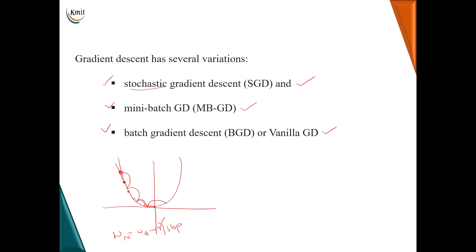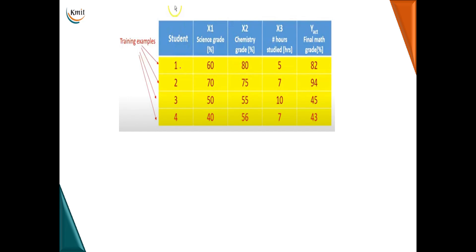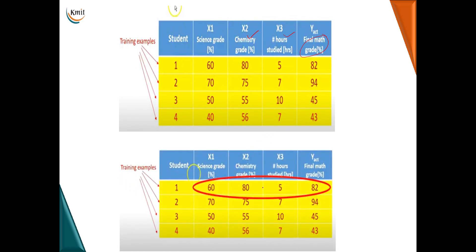Let's discuss all three variations using a simple example. Consider training data with four examples — four students with inputs x1, x2, x3 (science grade, chemistry, and study hours) and output y (grade marks). In stochastic gradient descent, only one training example is taken at a time to carry out forward and backward passes to update the weight. It is not compulsory to take the first example — any random example may be selected. Hence it is called stochastic (meaning random) gradient descent.